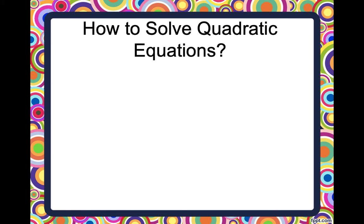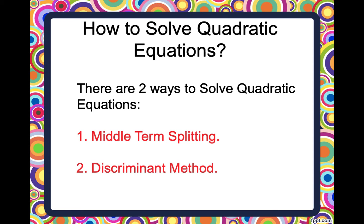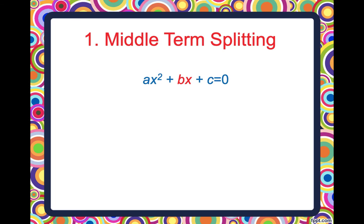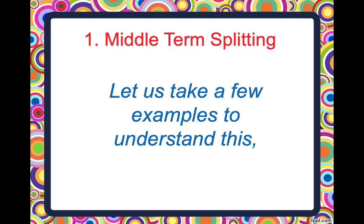Let us understand how we solve quadratic equations. There are two ways: number one is middle term splitting and number two is the discriminant method. In this video we are concentrating on middle term splitting and we will discuss the discriminant method in the second video. In middle term splitting, we split the term bx — the middle term — in such a way that the numbers obtained after splitting, when multiplied, are also equal to the product of a and c.